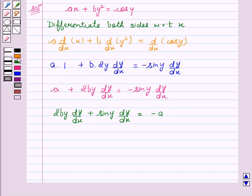This is equal to, on taking dy/dx common, we get 2by plus sin y equal to minus a.